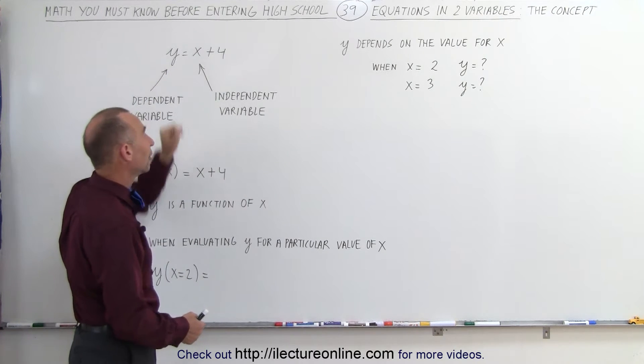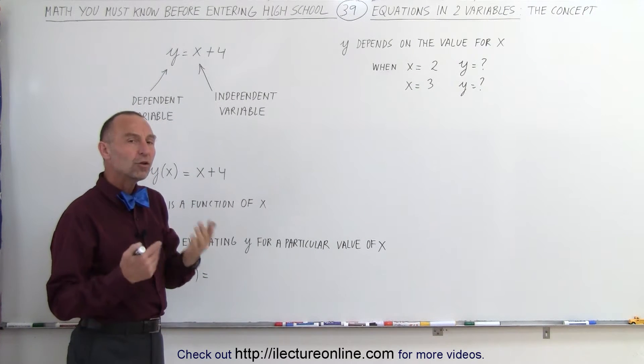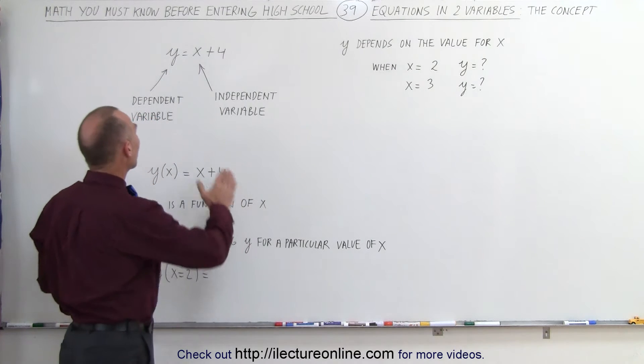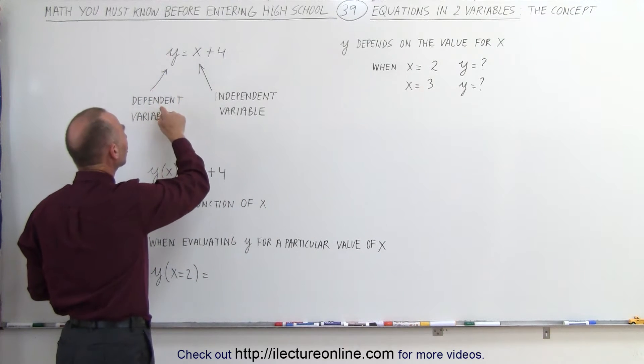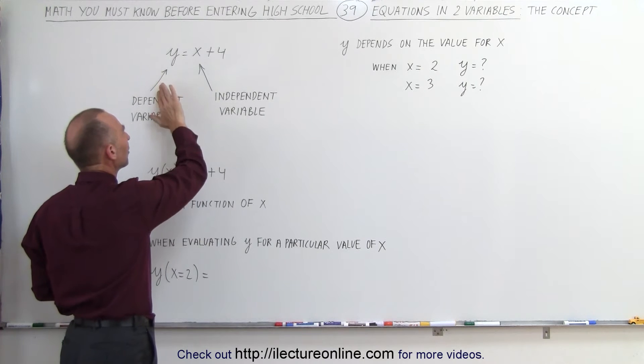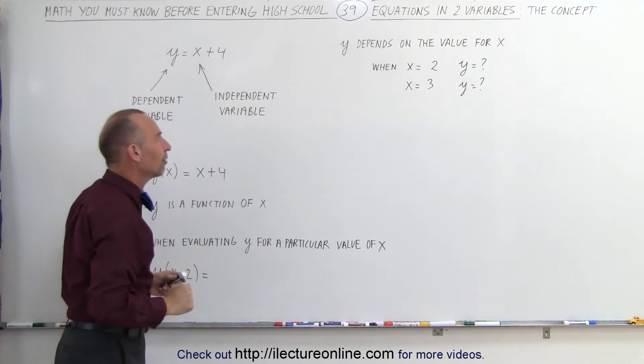The variable y and the variable x. But what we usually don't talk about is that one of the two variables, the one on the left side, is called a dependent variable, and the variable on the right side is called an independent variable.